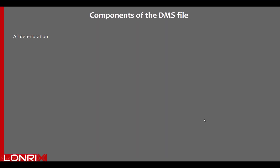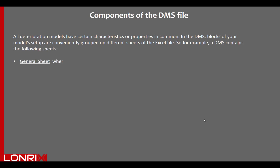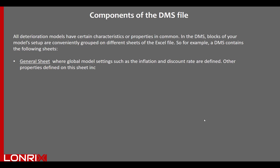Let's look at the components of the DMS file. All deterioration models have certain characteristics or properties in common. In the DMS, blocks of your model setup are conveniently grouped on different sheets of the Excel file. For example, there is a general sheet where all global model settings such as the inflation and discount rate are defined. Other properties defined on this sheet include type of model, start and end years, and so forth.